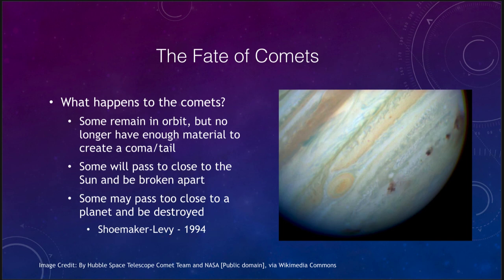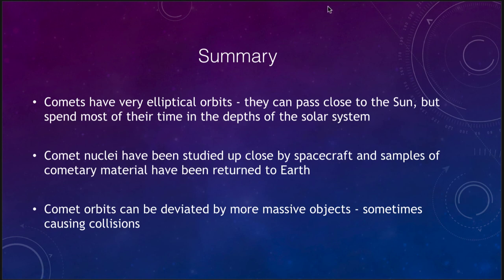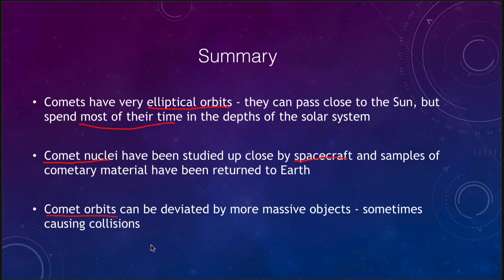So let's finish up with our summary. Comets have very elliptical orbits — they pass close to the sun, but most of their time is spent in the depths of the solar system. The nuclei have been studied up close by spacecraft, and even samples of cometary material have been returned to Earth. Finally, comet orbits can be deviated by more massive objects such as the planets, sometimes causing collisions. That concludes our lecture on comets. We'll be back again next time for another topic in astronomy — have a great day, everyone.